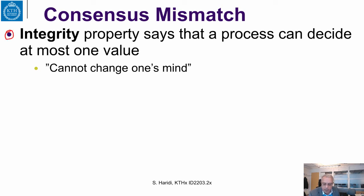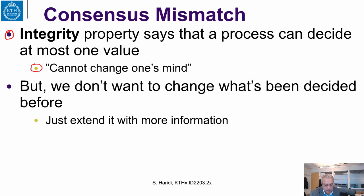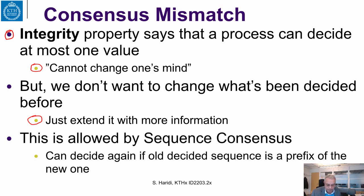Let us look at the consensus mismatch. If we look at the integrity property of single value consensus, it says that a process can decide at most one value — a process cannot change its mind. But we don't want to change what we have decided before; we just want to extend it with new information. This is allowed in the specification of sequence consensus: a process can always decide again if the already decided sequence is a prefix of the new one.